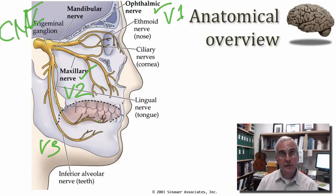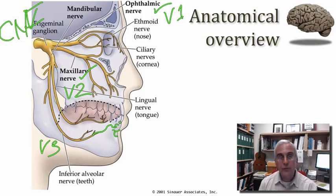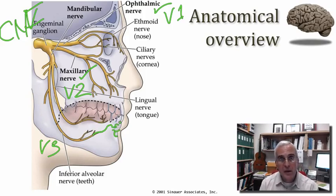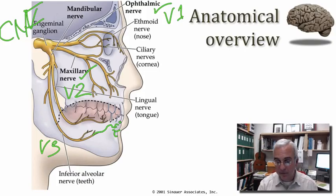The axon ends of concern for us are those that give rise to free nerve endings. Some subset of these axons terminate as free nerve endings, and at the ends of these axonal branches we find receptors that are part of the transient receptor potential family of receptors.